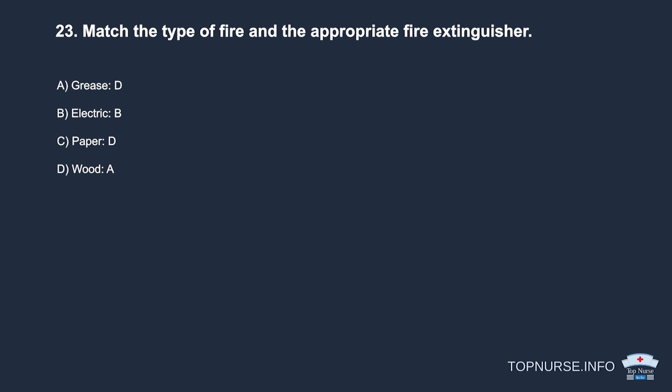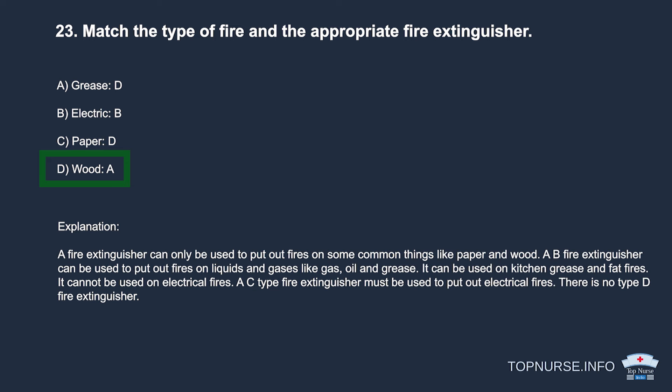Question 23: Match the type of fire with the appropriate fire extinguisher. a. Grease — Type B. b. Electric — Type C. c. Paper — Type A. d. Wood — Type A. Correct answer: d. Wood — Type A. A Type A extinguisher can only be used on common combustibles like paper and wood. A Type B extinguisher is for liquids and gases such as gas, oil, and grease. Type C must be used for electrical fires. There is no Type D fire extinguisher.